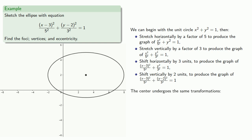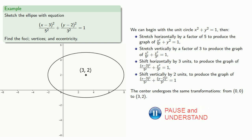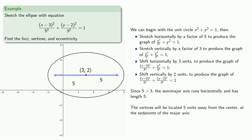The important thing to remember is that in all of this, the center undergoes the same transformations. The unit circle we started with was centered at the origin, (0, 0), and the horizontal and vertical stretches don't affect that location, but the horizontal and vertical translations do. So our center moves from (0, 0), horizontally 3 units and vertically 2 units, to (3, 2). Since 5 is greater than 3 — in other words, we stretched along the horizontal axis more than along the vertical axis — our semi-major axis runs horizontally and has length 5.